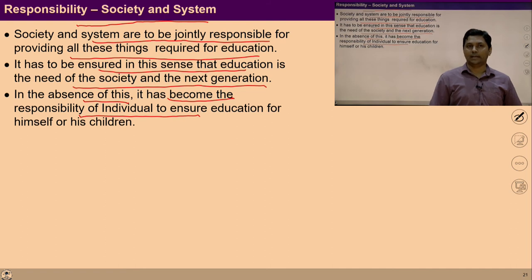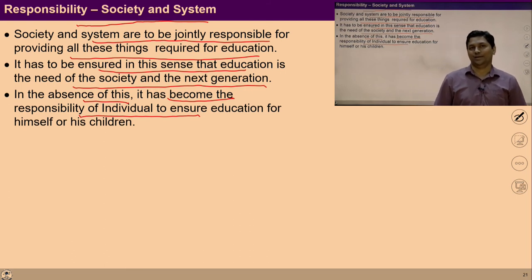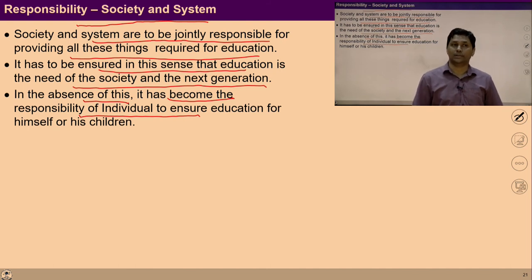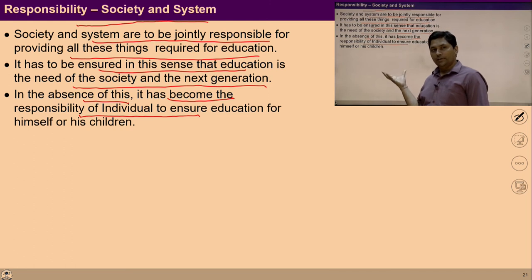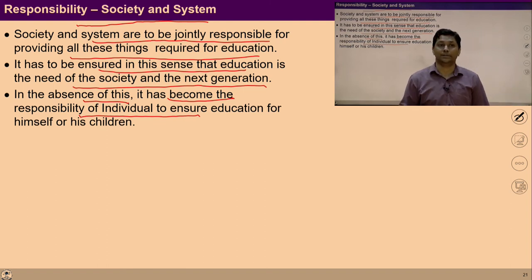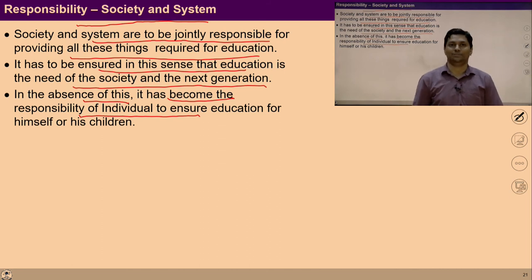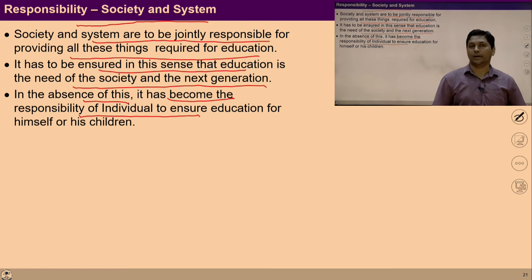What has happened now is that education has become a huge burden for the family. In the current situation, the whole time of the family is spent on the education and good health of the child. Both education and health should be the responsibility of society and the system at policy level. If the system does not fulfill this responsibility, all this work goes to private institutions and they work as a business — that is why education has been made into a business. So it is a combined effort of both system and society.